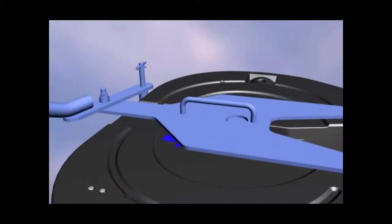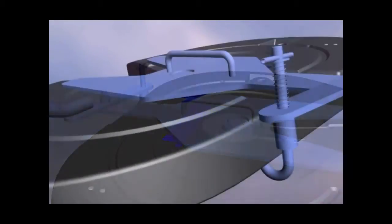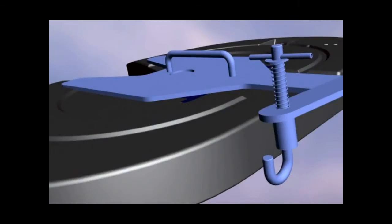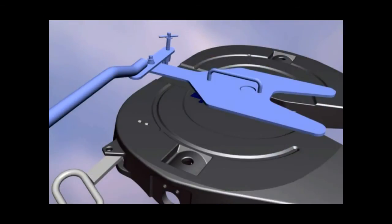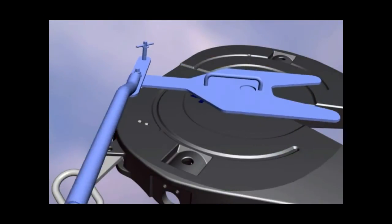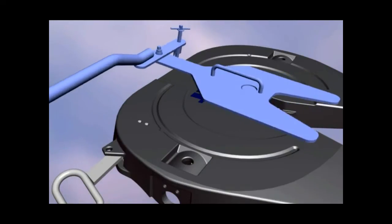First, rock the handle forward and back, checking for movement in the lock. The lock is adjusted properly if there is no fore and aft movement. Then disengage the hook and rotate the tester. The lock is adjusted correctly if the arm rotates freely with no fore and aft movement.